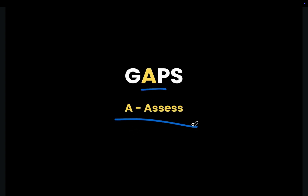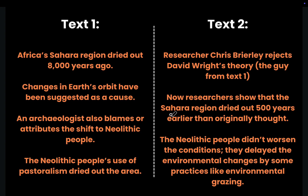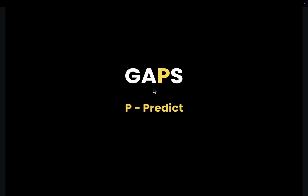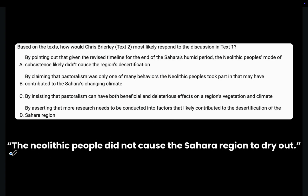Now we move on to A — Assess both sides, comparing Text 1 and Text 2 to find the two contrasting points. In Text 1, the Neolithic people's use of pastoralism dried out the area, while in Text 2, the Neolithic people did not worsen conditions — they delayed environmental changes. Moving to P — Predict: the person in Text 2 would tell the person in Text 1 that the Neolithic people did not cause the Sahara region to dry out.